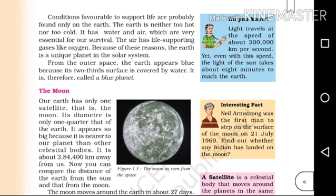From outer space, the Earth appears blue because its two-thirds surface is covered by water. It is therefore called the blue planet.